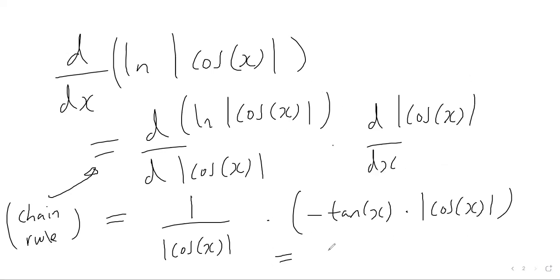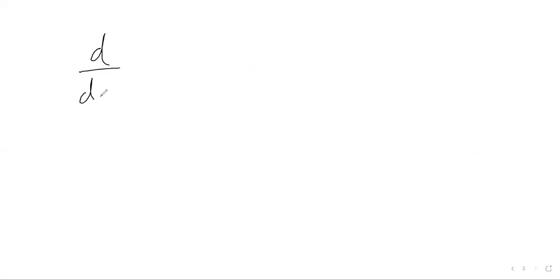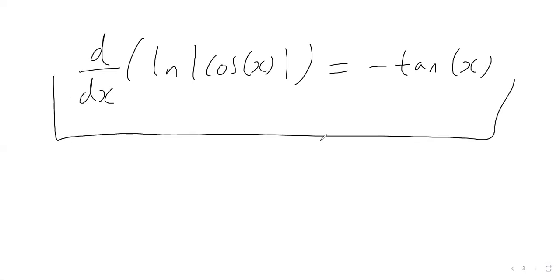So we can tidy this up. We get negative tan x multiplied by modulus of cos x, all over modulus of cos x. Obviously the modulus of cos x cancels out to one, and so our final result is just negative tan of x. Therefore, when we differentiate ln modulus of cos x, we get negative tan of x. That's the key result for this video.